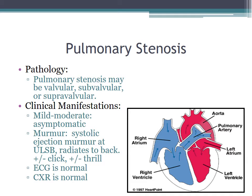For mild to moderate pulmonary stenosis, the patient will typically be asymptomatic. The murmur is a systolic ejection murmur at the upper left sternal border that radiates to the back. There can be an early systolic ejection click, indicative of a valvar issue, and a thrill if the murmur is at least grade four. The EKG and chest x-ray are typically normal in mild to moderate pulmonary stenosis.